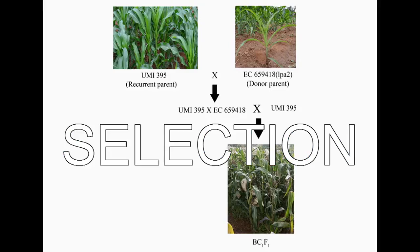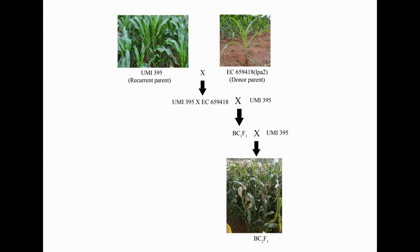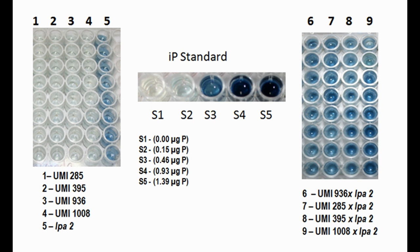In marker-assisted selection, among the Backcross 1 plants, the ones with appreciable phytate content are selected using a foreground marker. Phenotypic selection is carried out by two methods: one is the Phytase Assay by Davis method, and the other is the high inorganic phosphorus assay. In the case of UMI 395 and LPA, an SSR marker UMC 2230 is used. Plants which have a higher amount of phosphorus will have a lower amount of phytate and vice versa.